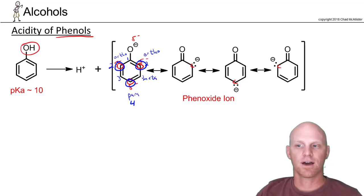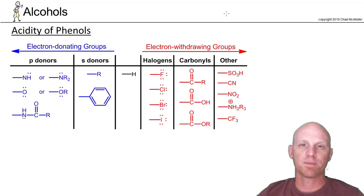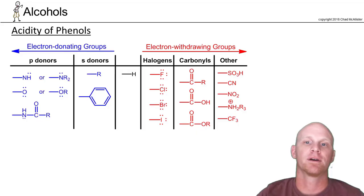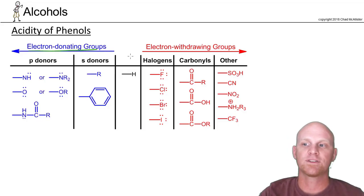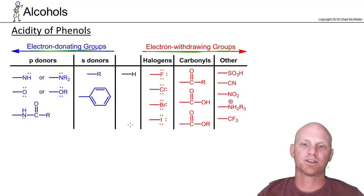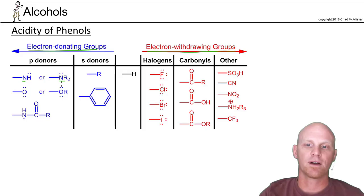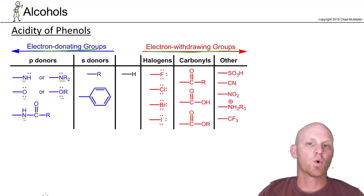To discuss inductive stabilization with phenols, we first need to talk about different substituents we might put on a benzene ring and how they affect acidity. We talk about electron donating groups and electron withdrawing groups. Electron donating groups donate electrons either by resonance or hyperconjugation. A nitrogen atom or oxygen atom with a lone pair can donate by resonance. Although they're electronegative and might withdraw inductively, they donate so much more by resonance that overall we consider them donating groups.